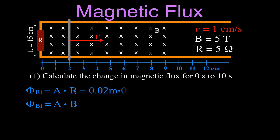The initial area is not zero because we're starting at 2 centimeters. So that's 0.02 meters — convert everything to meters — times the length which is 15 centimeters, 0.15 meters, times the magnetic field strength. That gives us an initial magnetic flux of 1.5 times 10 to the minus 2 Webers.